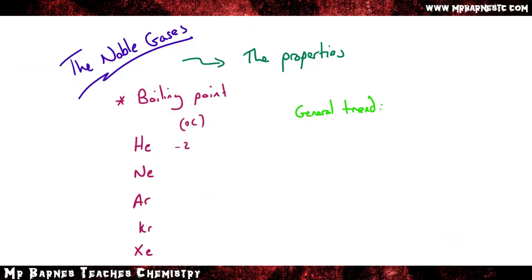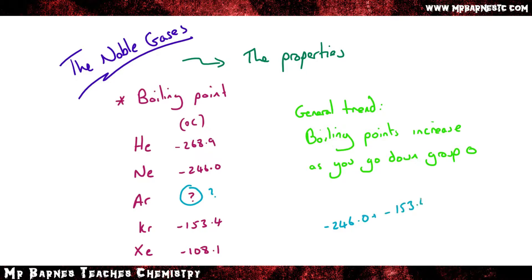If we look at the boiling points you can see a similar pattern emerging. So in general the boiling points increase as you go down group zero. So for example if they ask you to work out the boiling point for argon you can see that neon is minus 246.0 and krypton minus 153.4.